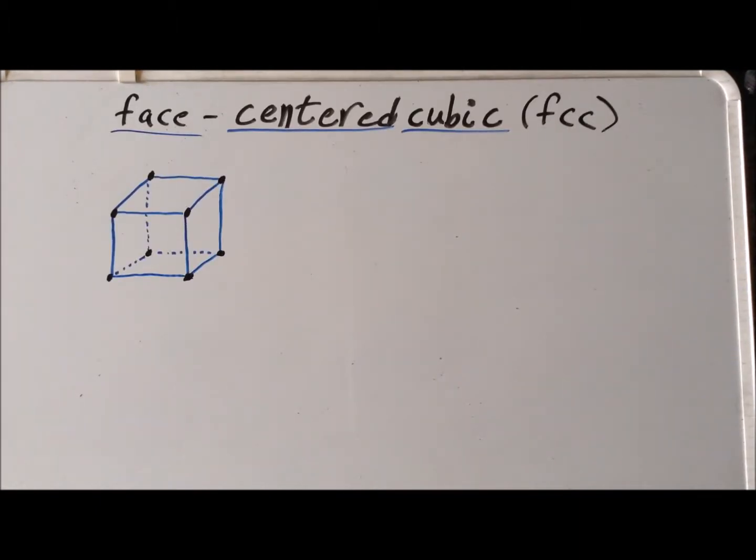Recall that if we have an extended lattice of exactly one element, such that the atoms are at the vertices of a cube, then we have the simple cubic structure.